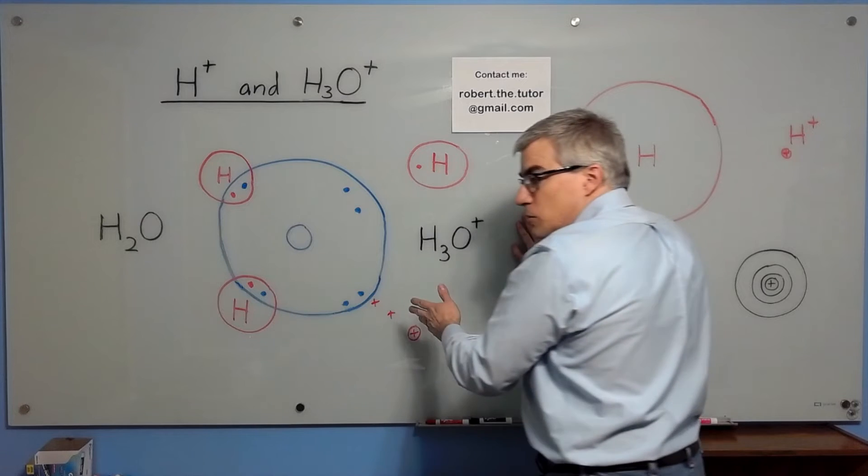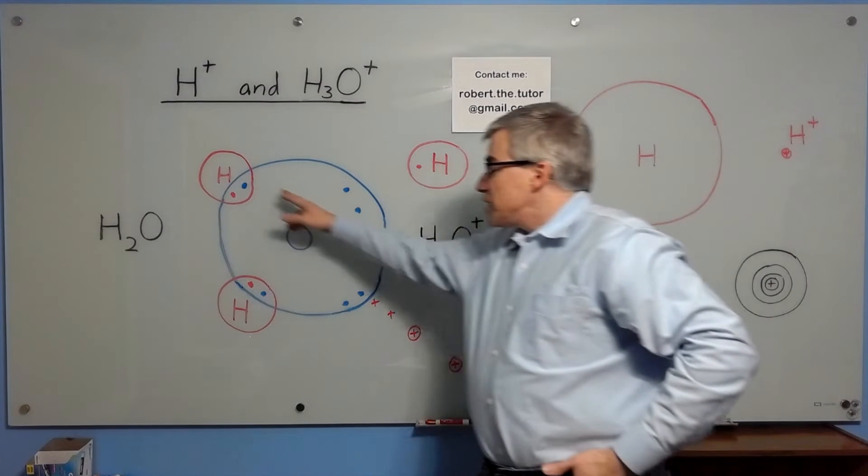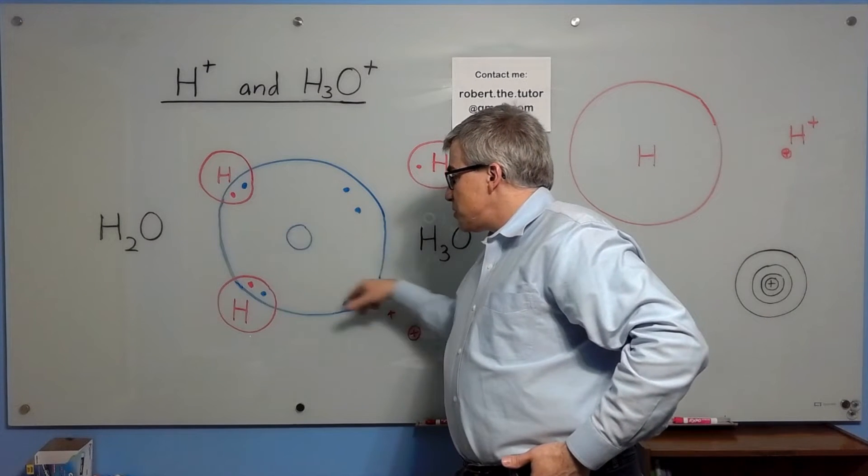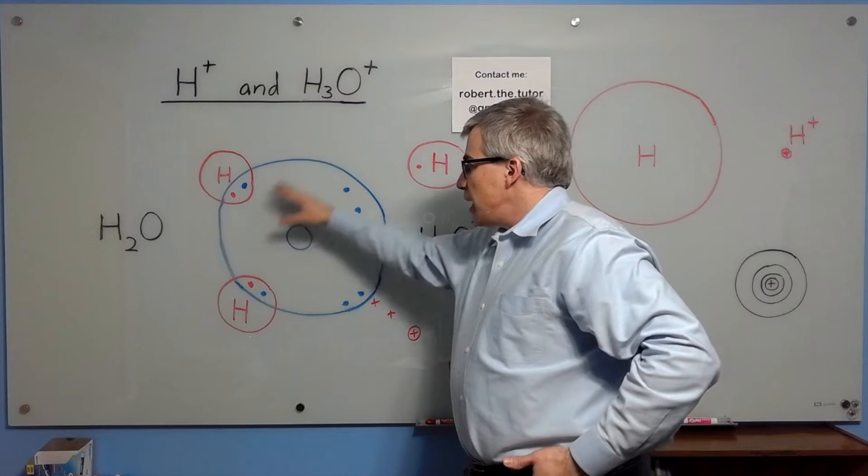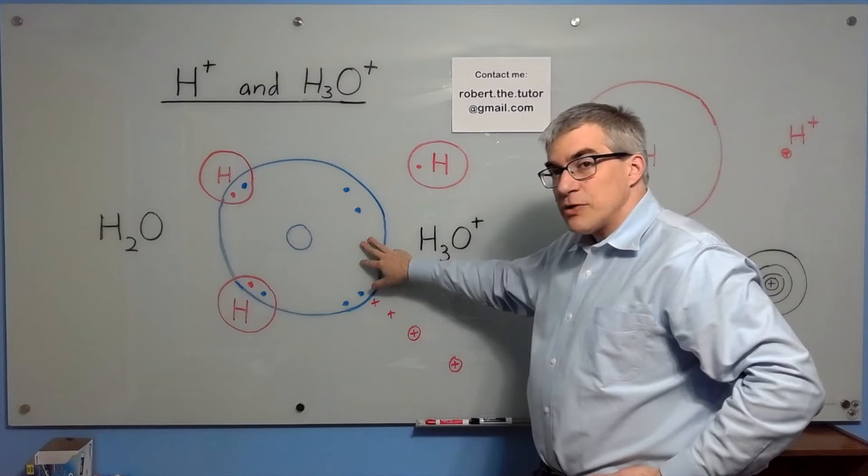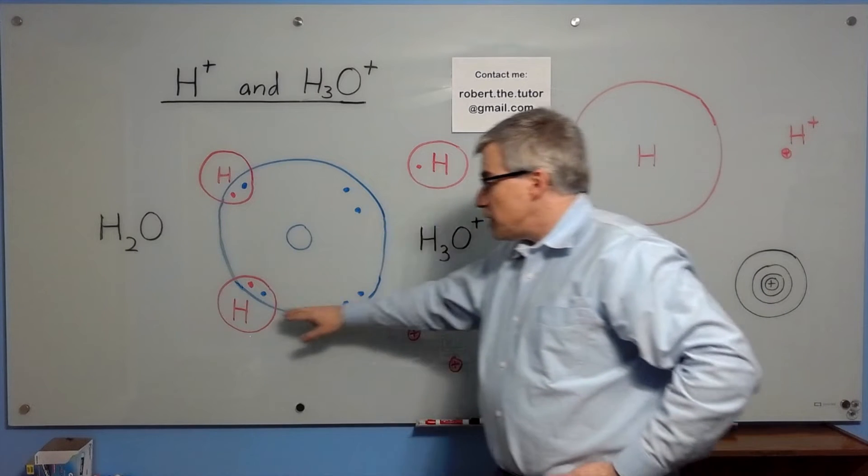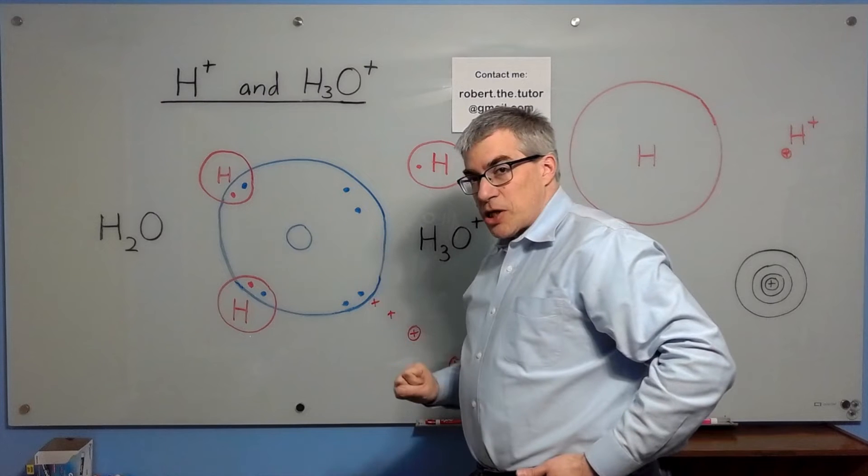You start with a water molecule. We've got oxygen with six valence electrons, hydrogens with one each. They share two of them, and then we get to a full octet for the oxygen, so it's all set. The hydrogens are all set with two. You have a stable molecule.